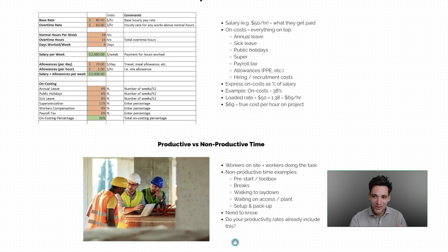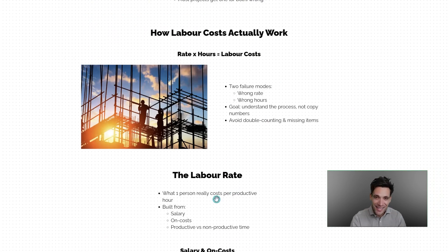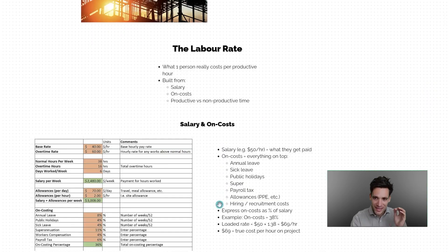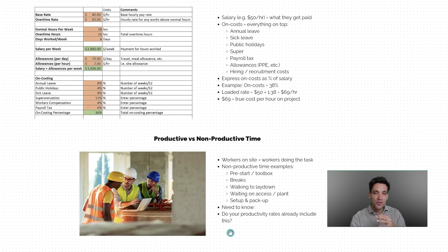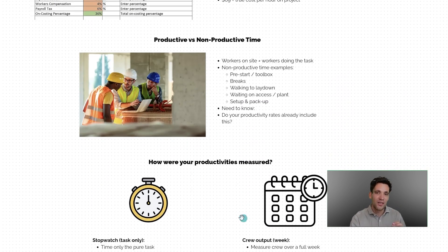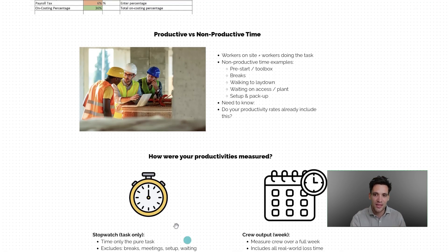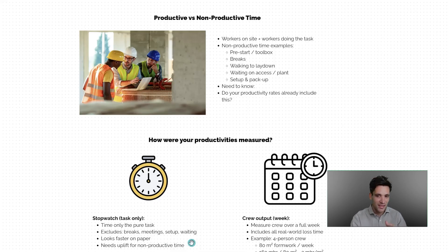Here's where things start to get a little confusing, and why understanding the process matters more than copying the numbers. When we talk about applying a productivity rate to this cost, some people will include non-productive time in their productivity rate, and some people won't. There are two ways to measure productivity for a task: the stopwatch method, which is purely the task productivity and excludes breaks, meetings, setup, and waiting — it looks faster on paper, but you need to factor in non-productive time separately.